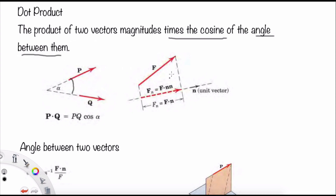In more general terms, consider a unit vector n. If you want to know the scalar projection of F in the n direction, it is Fn equal to F dot n. But if you want the vector projection of F in the n direction, it is F equal to (F dot n) times n. Please remember this equation as we will use it in many problems later.